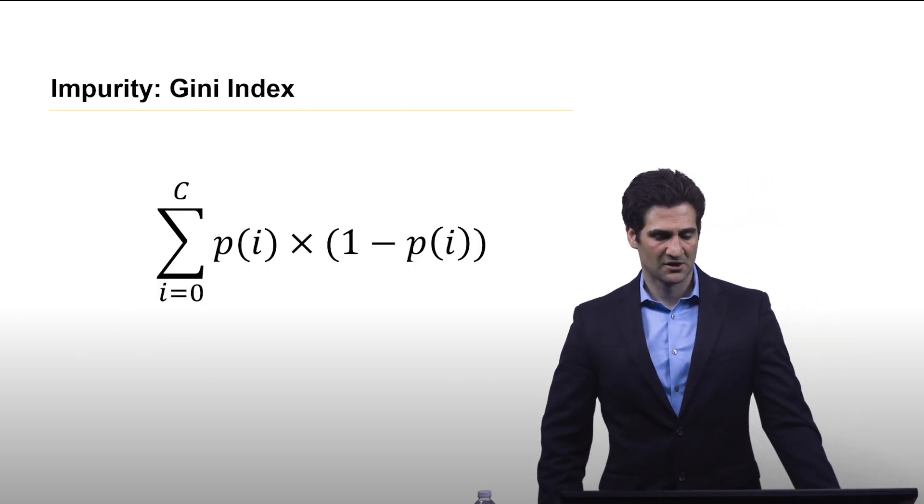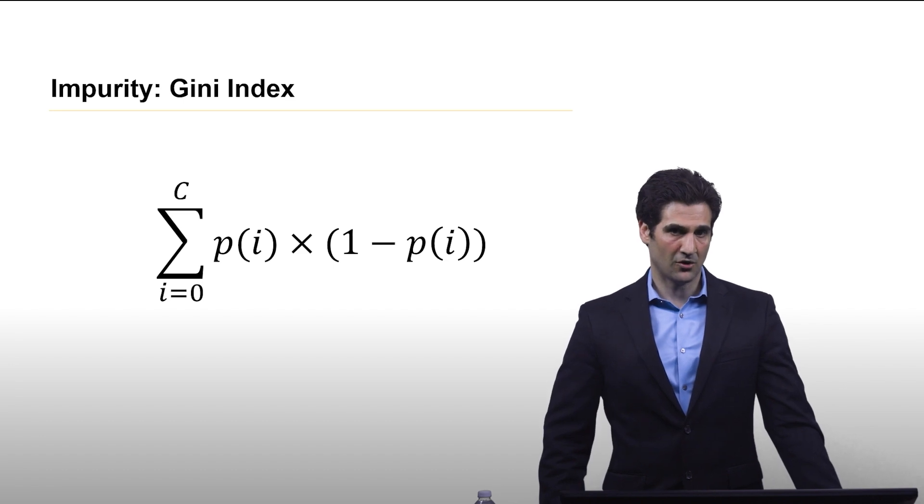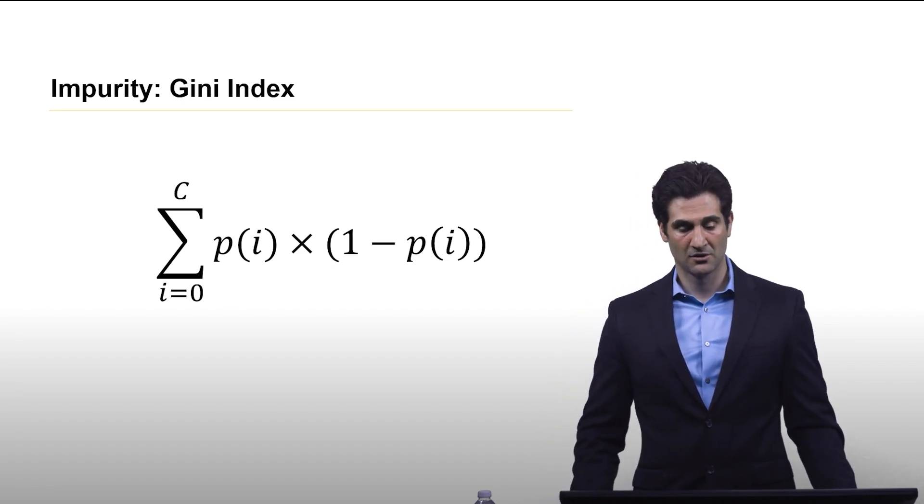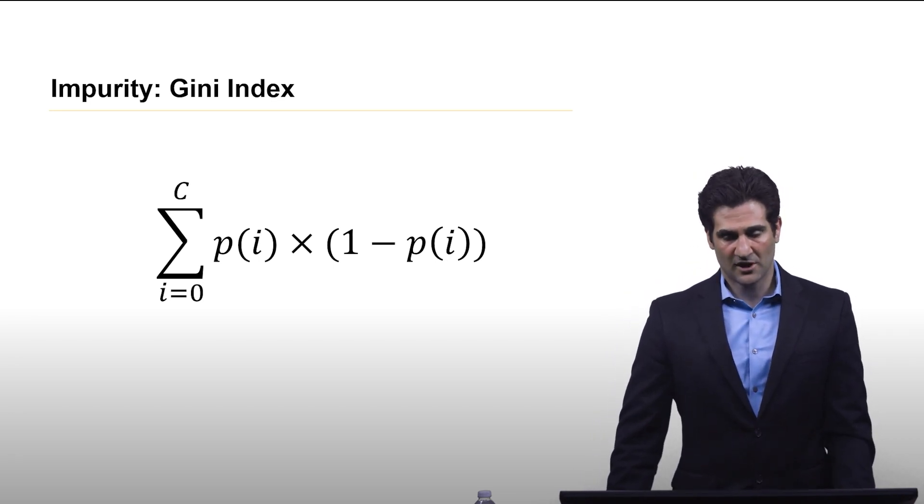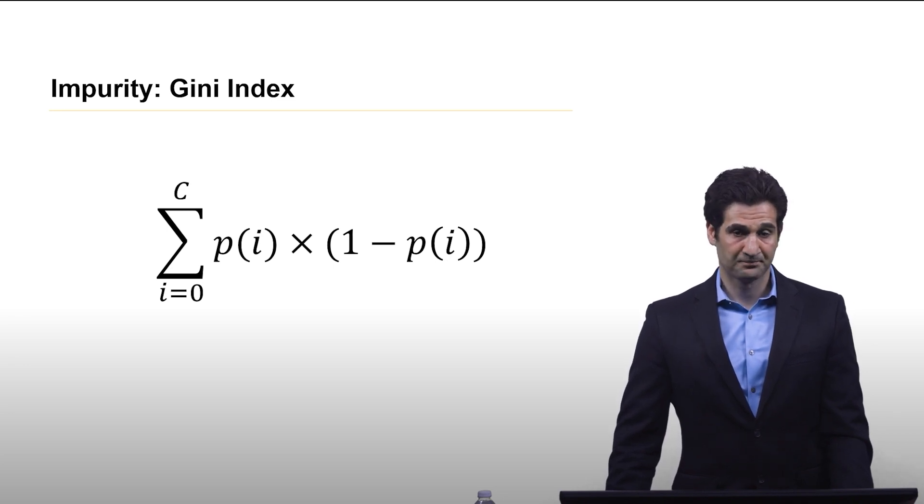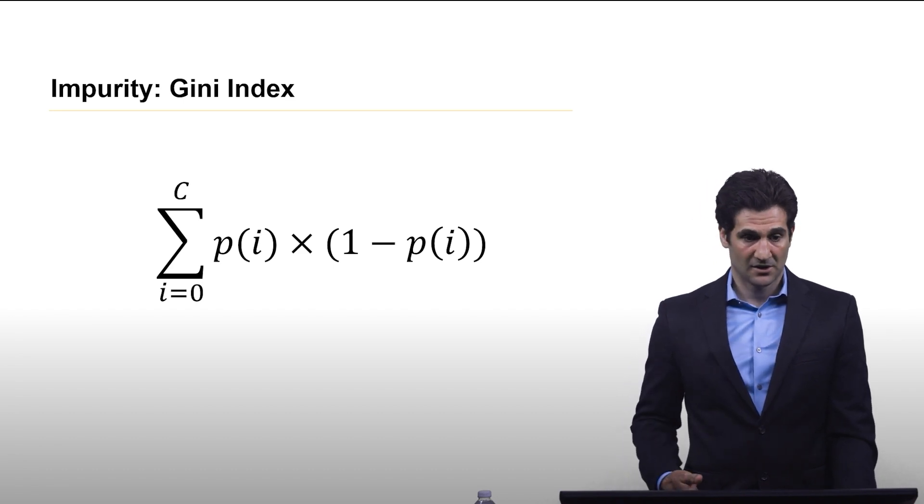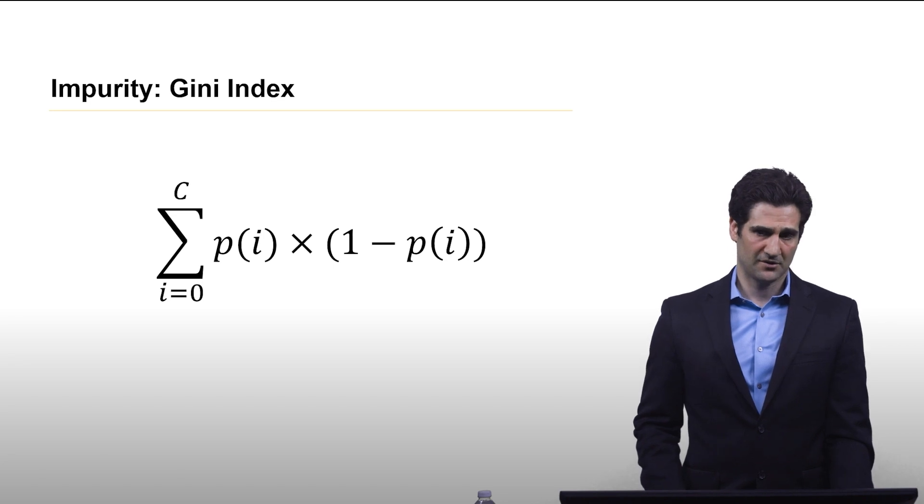So here is the Gini index. So it's a summation over all classes. So I've indexed the classes starting at number 0, maxing out at C. And we are computing the probability a sample picked at random is in that class. And then multiplying it by 1 minus that probability. So let's look at how the values of the Gini index for our example with the Iris data set.